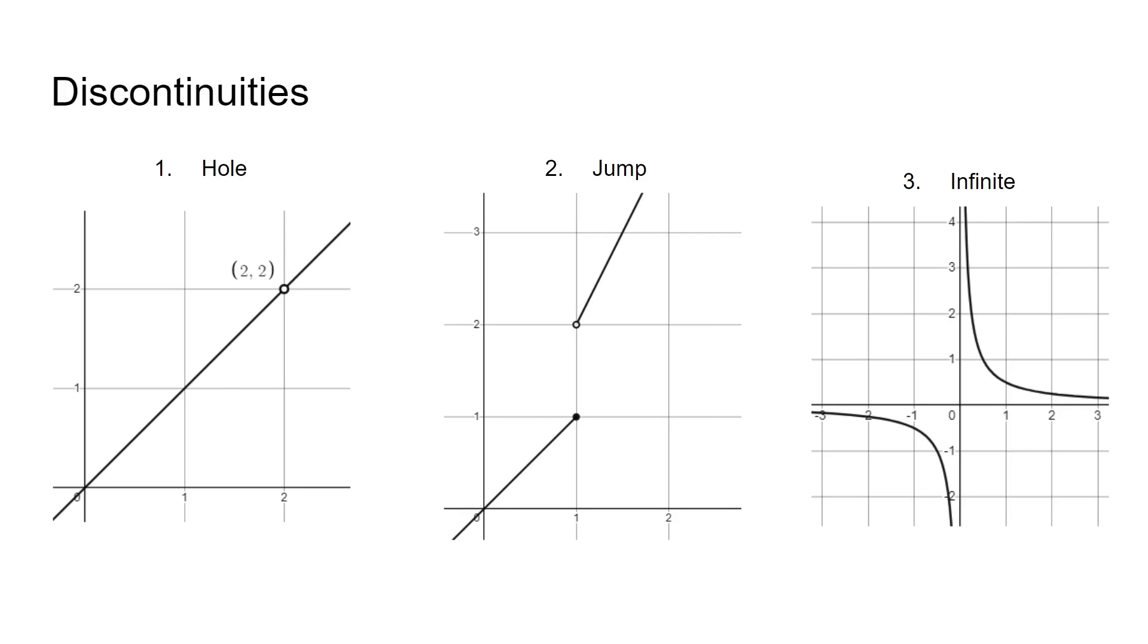In jumps, the limit from both sides are different, and there is a large space in between them, and it's kind of like a jump. In asymptotes, the limits go to infinity and are never able to reach each other.